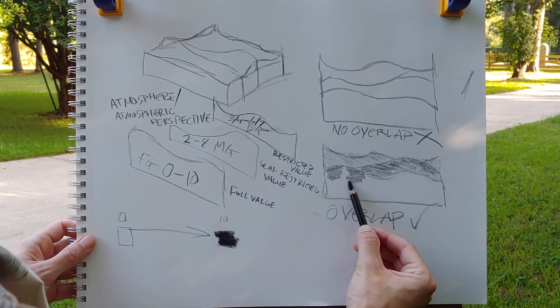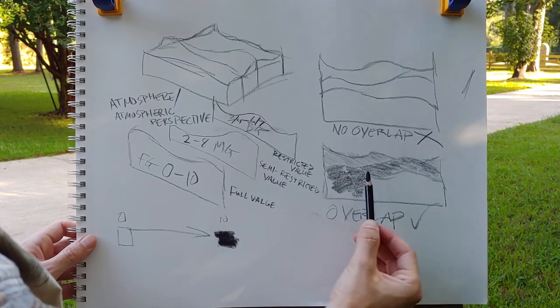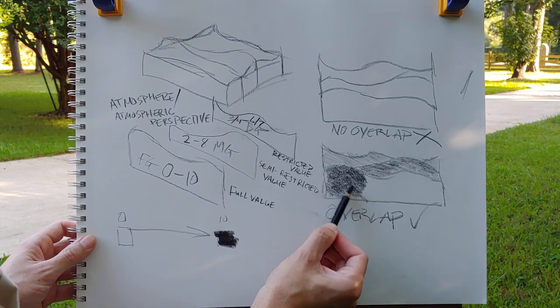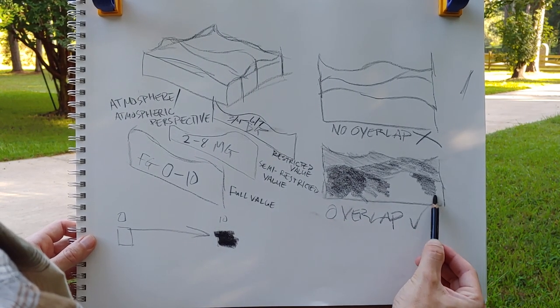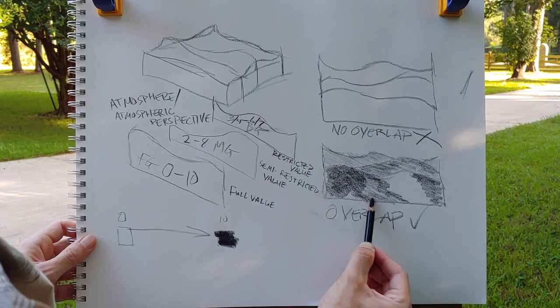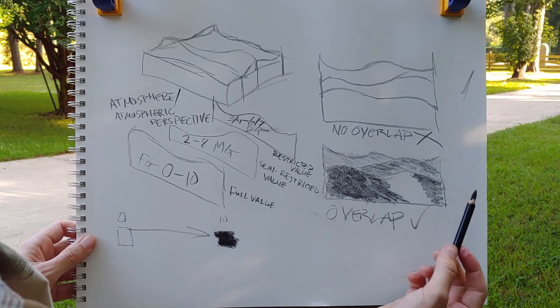So there, in the foreground, I'm going to mix it up a little bit and create a value range that's mixed up. It has some darks, it has some lights in it, it has some middle values.